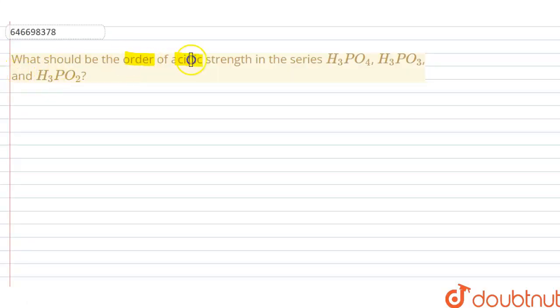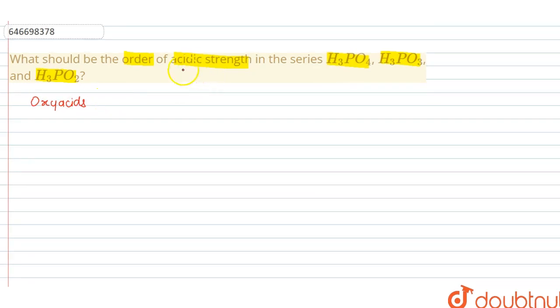In this question, we are given some acids: H3PO4, H3PO3, and H3PO2. All of these are the oxy acids of phosphorus. Now here we have to find out the order of acidic strength.